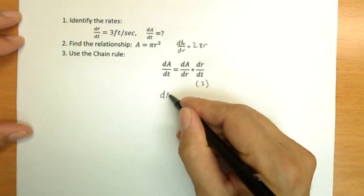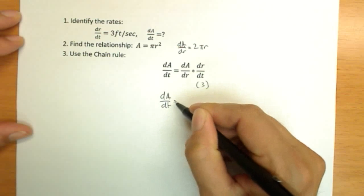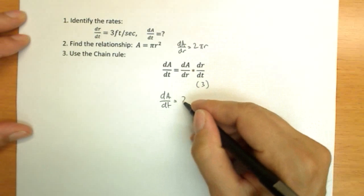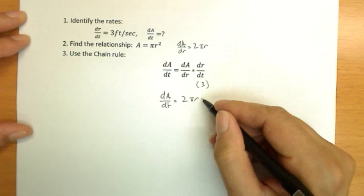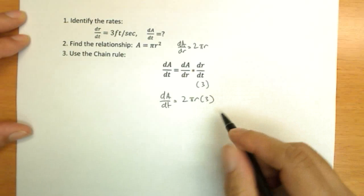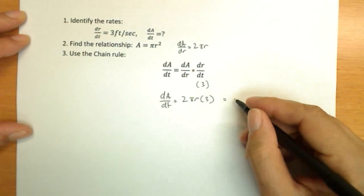So dA/dt, then, equals dA/dr, which we just found is 2 pi r times 3. Or maybe simplifying, we would have 6 pi r.